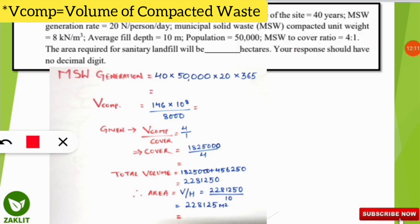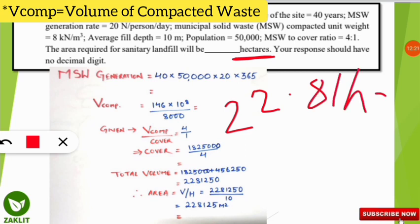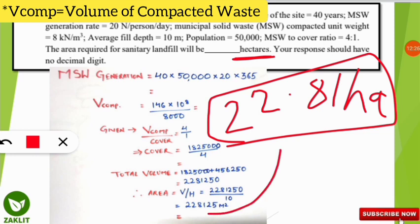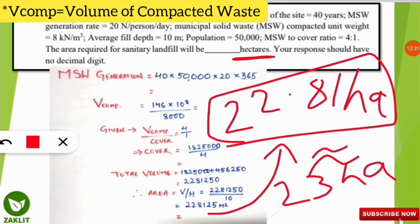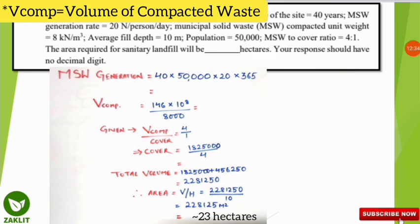Converting to hectares: 228,125 m² equals approximately 22.81 hectares, which is close to 23 hectares — the answer given in the sample paper's answer key. Subscribe to the channel for further updates and all the best for the examination.